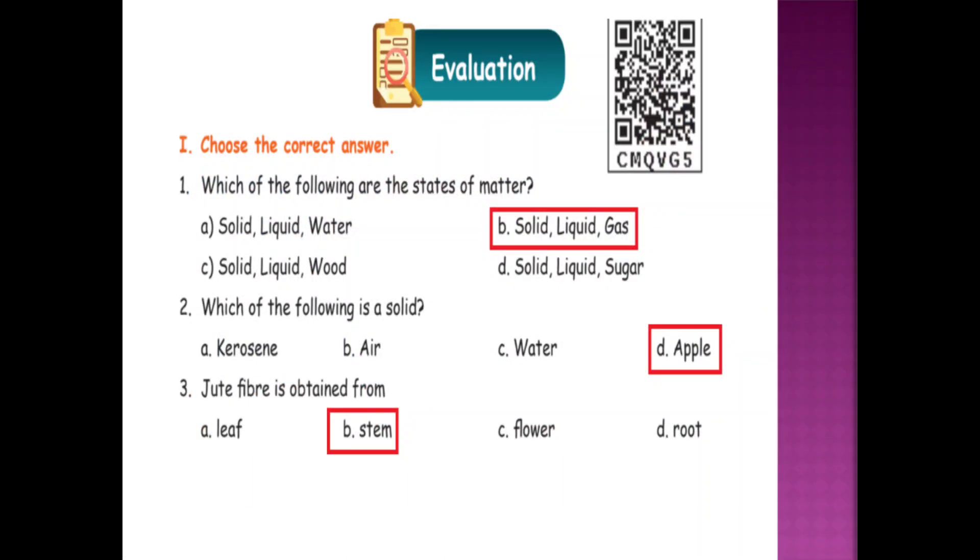First, choose the correct answer. Which of the following are the states of matter? Option A: solid, liquid, water. Option B: solid, liquid, gas. Option C: solid, liquid, wood. Option D: solid, liquid, sugar. Option B: solid, liquid, gas.